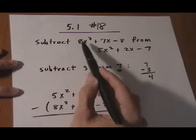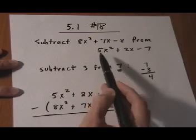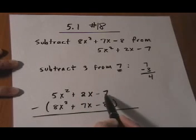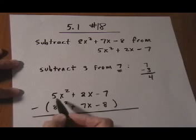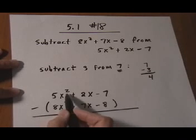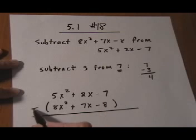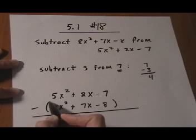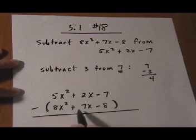Same thing applies here. The second one that was mentioned — the 5x squared plus 2x minus 7 — goes on top. We're subtracting the other one from it. So now the way we want to set it up is 5x squared plus 2x minus 7, take away the entire quantity of 8x squared plus 7x minus 8.